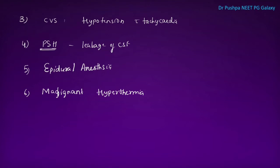Clinical features of malignant hyperthermia: tachycardia, rise in end-tidal carbon dioxide, metabolic acidosis or respiratory acidosis, hyperkalemia, hypernatremia, and cyanosis. Hyperthermia is a late sign. The most initial sign of malignant hyperthermia is masseter muscle spasm.